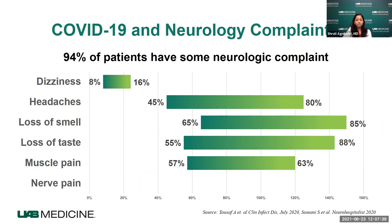About 94% of patients will have some neurologic complaint as part of their early or initial COVID-19. Dizziness can be seen in up to 16% of patients. Headaches are very common — anywhere between 45% to 80% of patients will have headache as their initial symptom. Loss of smell and loss of taste ranges from around 55% to 90% of patients. Muscle pain is also very common, seen in up to 57% to 63% of patients.